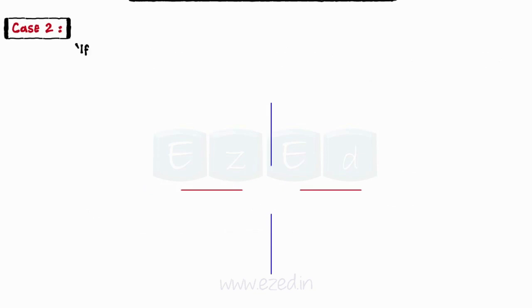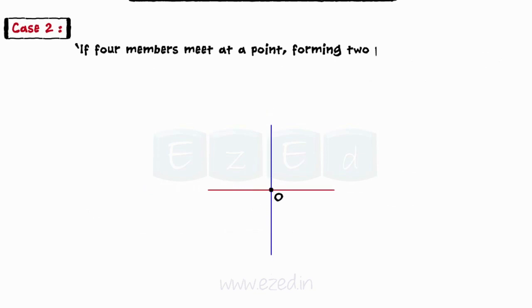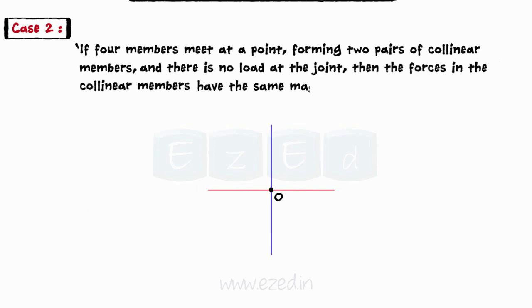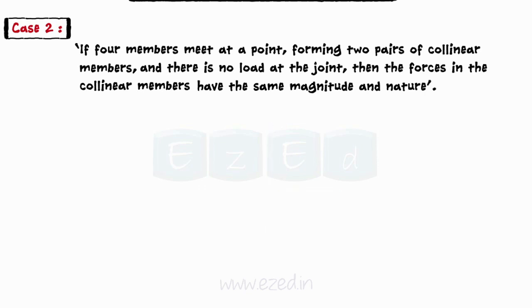If four members meet at a point forming two pairs of collinear members, and there is no load at the joint, then the forces in the collinear members have the same magnitude and nature.